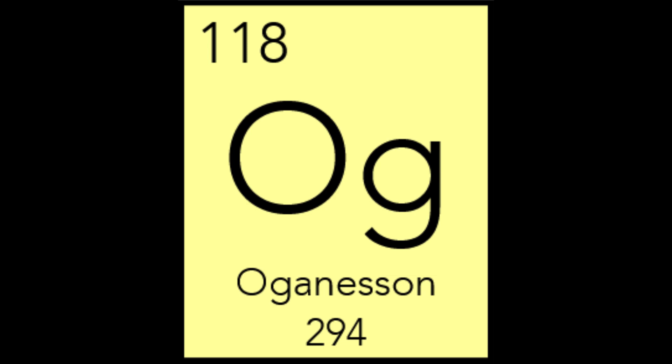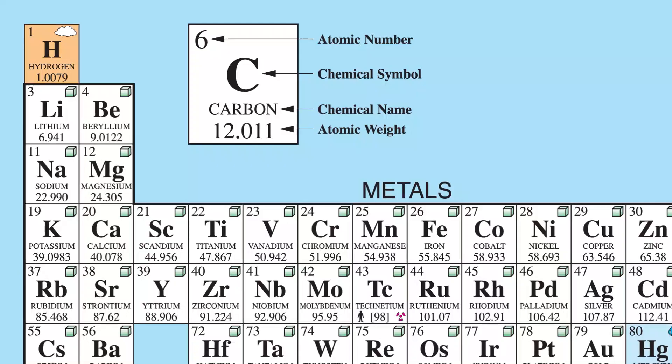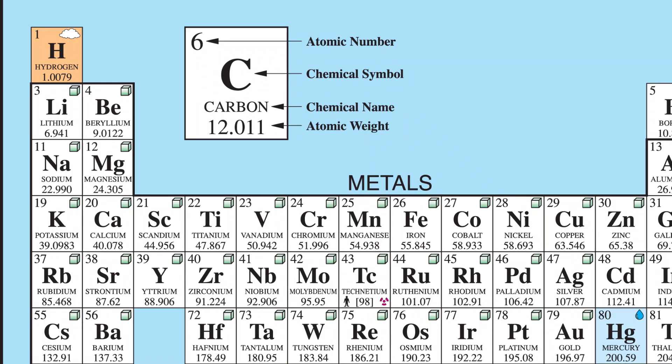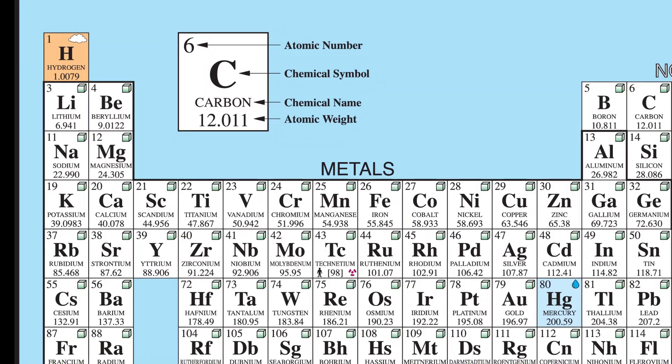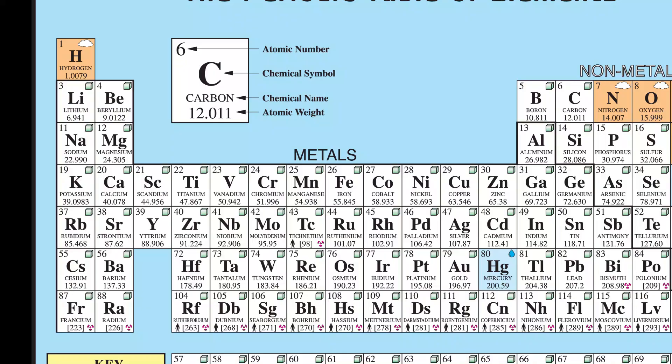That is all I have to say about the meaning of the names of the 118 known elements. There is of course the possibility of even more elements being added, which could possibly be in an 8th row, but that seems quite a way away. I am done with this massive project and my curiosity is sufficiently satisfied. If you would be interested in a similar video about the meanings behind the names of all the countries, let me know in the comments. Subscribe to be notified when the next equally insane project comes out, as I don't necessarily upload my videos periodically. Thank you, goodbye.